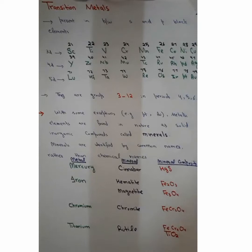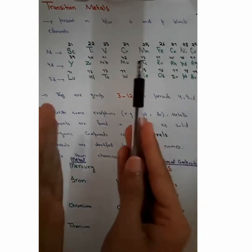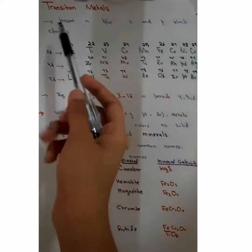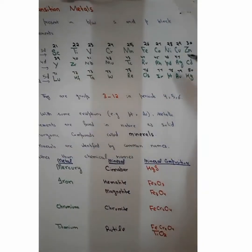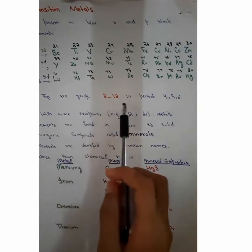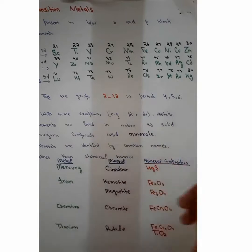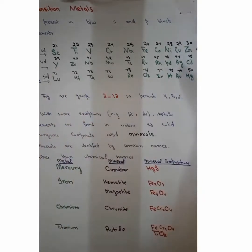In coordination chemistry, we study transition metals. Transition metals are present in three series: the 3d series, 4d series, and 5d series in the periodic table. The word 'transition' means in between or intermediate — those elements present in between the s-block and p-block elements are called transition metals. They are found in groups 3 to 12 in periods 4, 5, and 6. The 3d series is the most important and the one we deal with most.